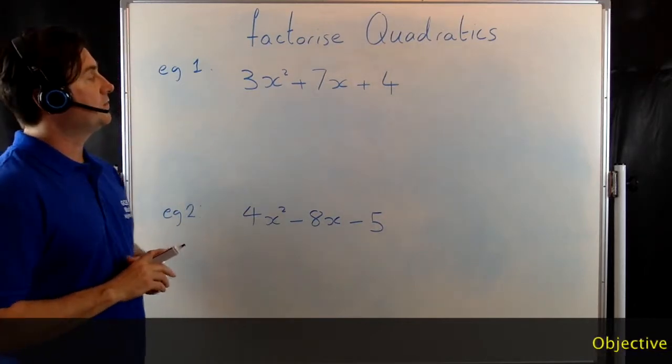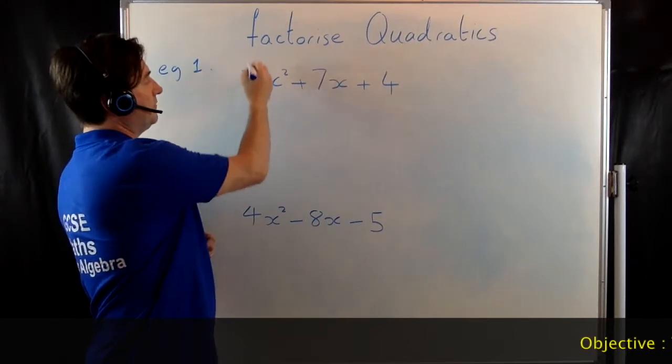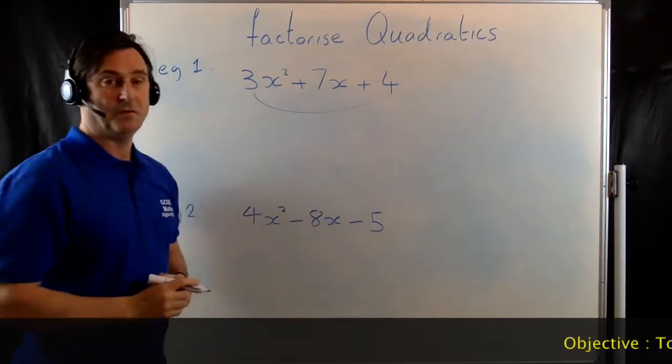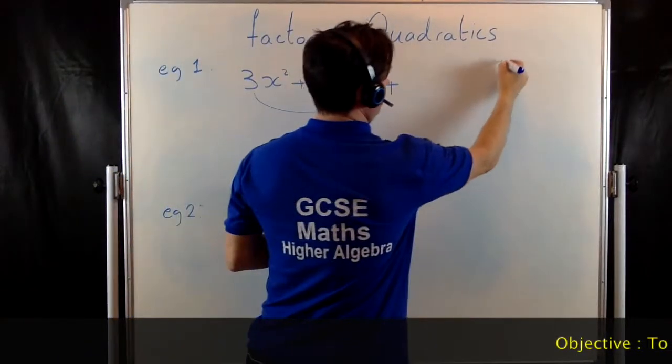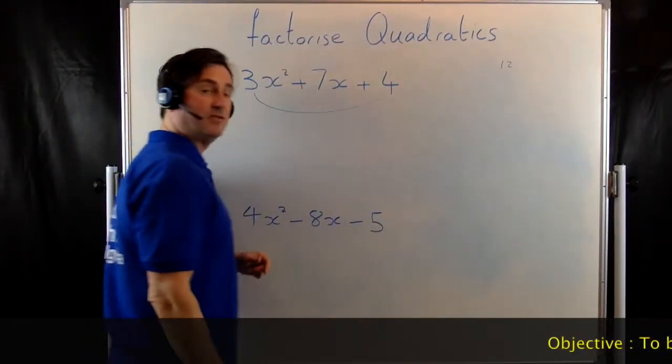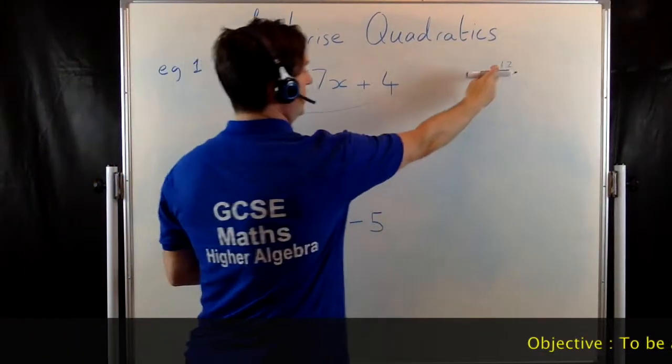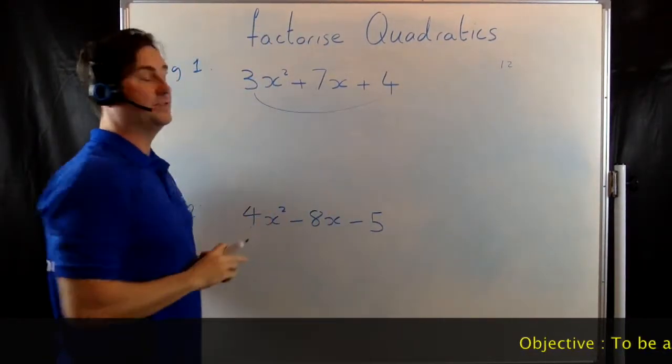What we're going to do first of all then. Part 1. We take the coefficient in front of the x squared and we multiply it by the 4. That gives us 12. Write that over in the right hand corner. What we're now looking for is two numbers that multiply to give 12 and that add to give 7.